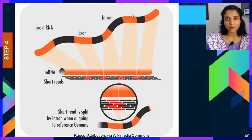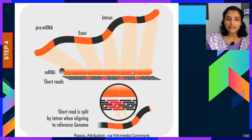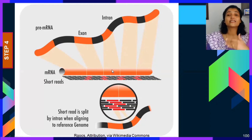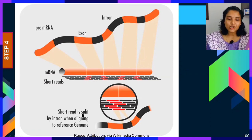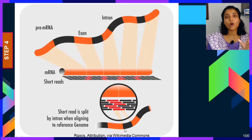This is the problem shown in the diagram: your pre-mRNA has both introns and exons, but your processed mRNA has the introns removed. You reverse-transcribe the mRNA to cDNA and take short reads from it. When aligning these short reads to the reference genome, a read can be split by an intron — part of the read maps to one exon and the rest to another exon. This is a major challenge during the assembly stage.